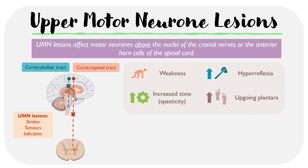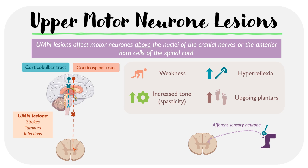To explain the changes in reflexes, we have a simplified diagram of the knee jerk reflex here, where a tendon hammer is applied to the patella and signals are transmitted from the knee to the spinal cord via afferent sensory neurons. In return, the spinal cord transmits an impulse from the spinal cord to the knee via efferent motor neurons, which results in the reflex response.